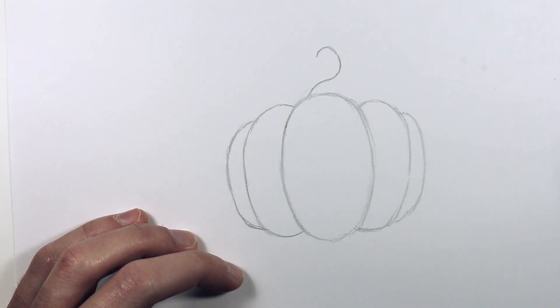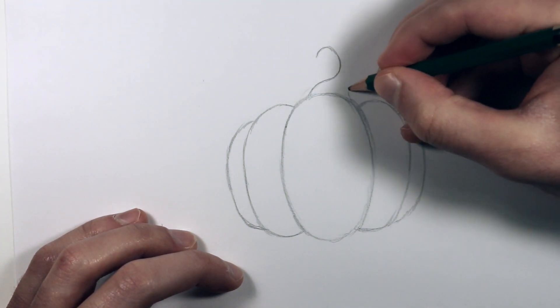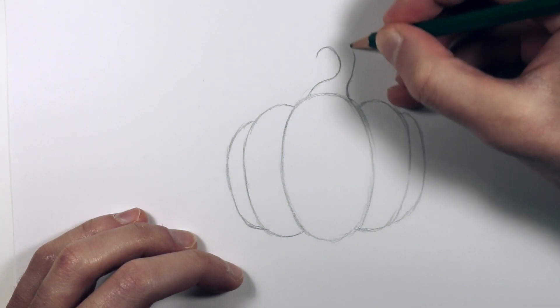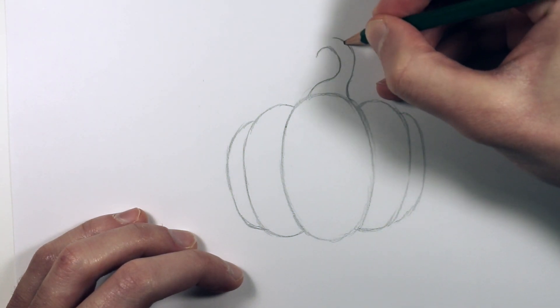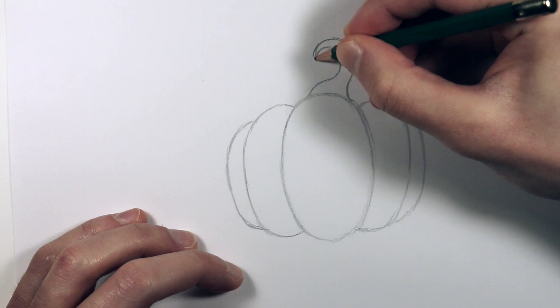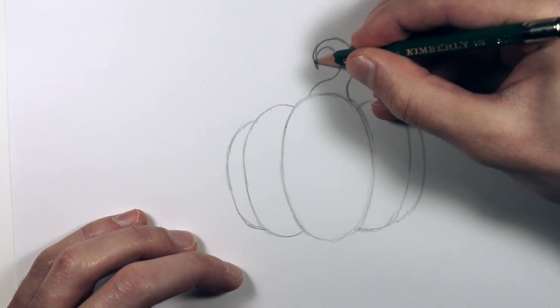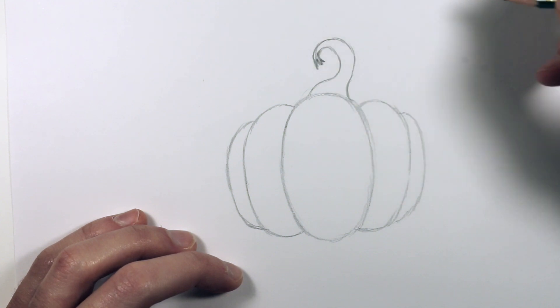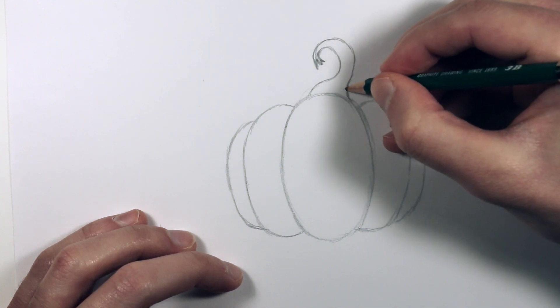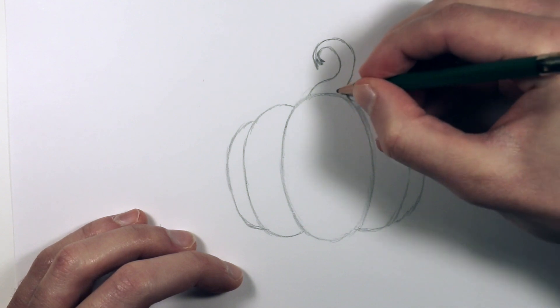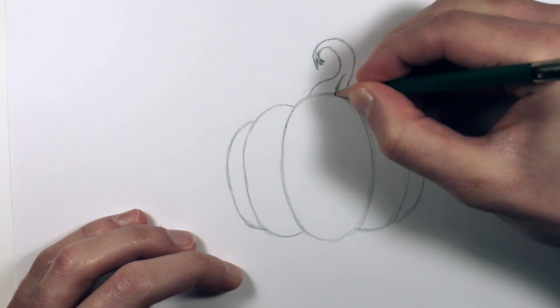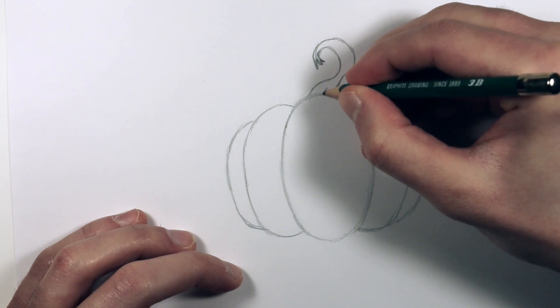And we'll also draw some leaves coming out. Okay, and then back at the base of the stem we'll just draw a couple little lines here to give it a little bit of texture.